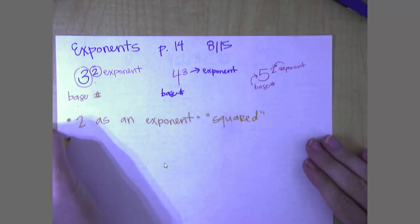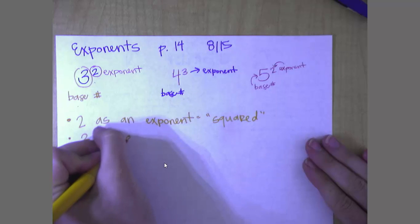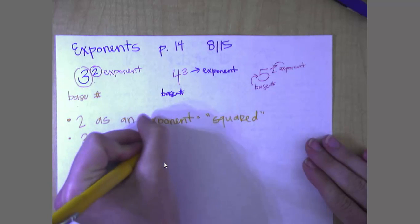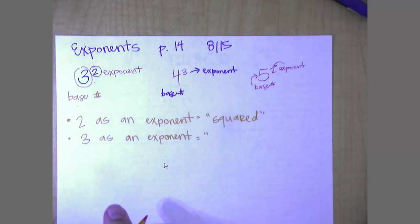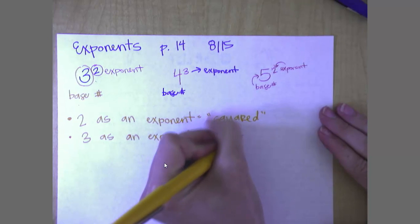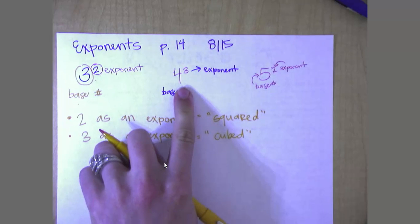If it's got a little 3 as an exponent, anybody know what we say to that? What was that? Cubed. Good. So this would be 4 cubed.